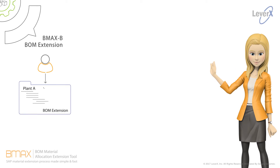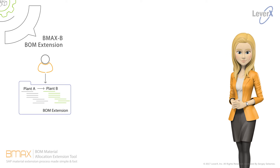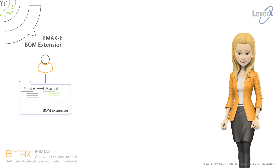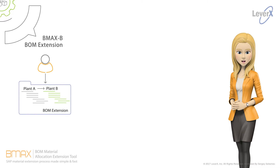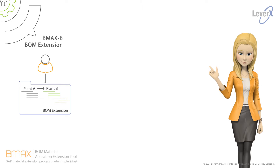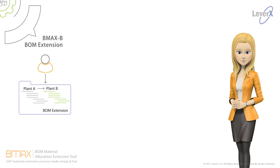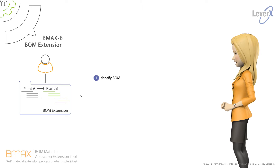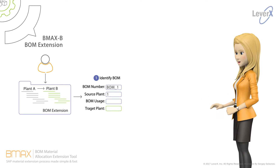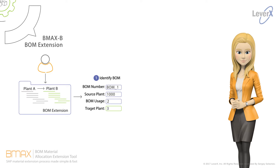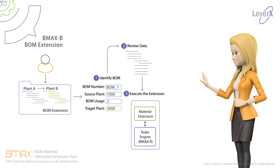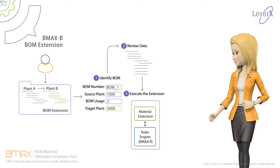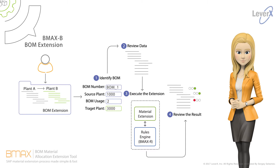BMax B simplifies the extension of existing bill of materials with their full bill of materials structure to production plants. With BMax B, extending one or many bill of materials or materials can be done with a click of a button. Step one: identify the bill of materials to be extended. Step two: review data to be extended. Step three: execute the extension process. Step four: review the results.